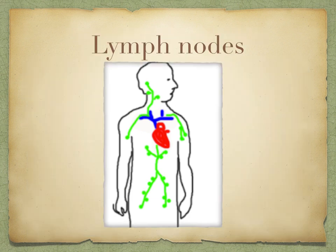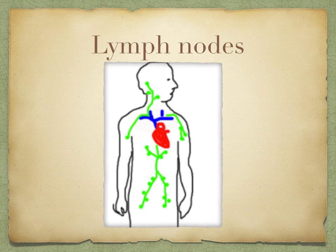On its way from the tissues to the subclavian vein, lymph flows through several lymph nodes. Lymph nodes contain large numbers of white blood cells, of which many are lymphocytes. During an infection, these white blood cells multiply by cell division and make antibodies. Some of these lymphocytes leave lymph nodes, circulate around the body in the blood, and constantly patrol for fresh invasions of pathogens. So the lymphatic system is an important part of the body's immune system.